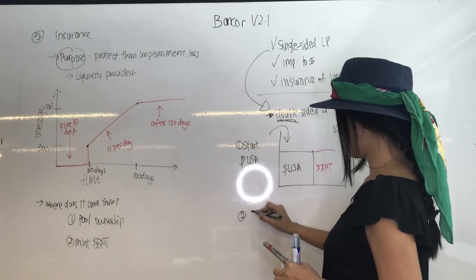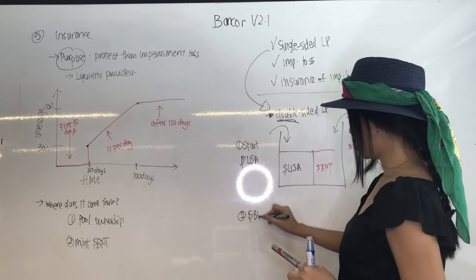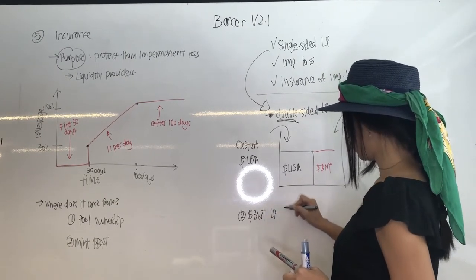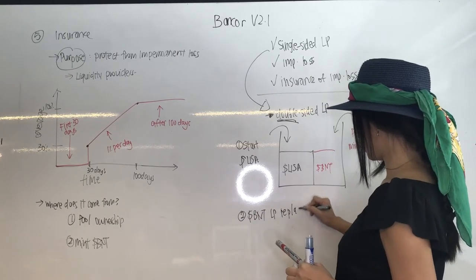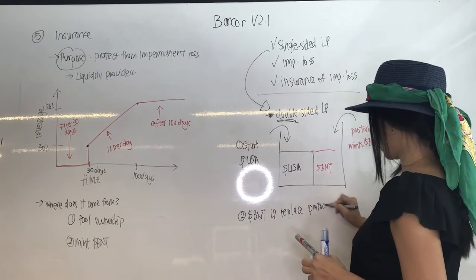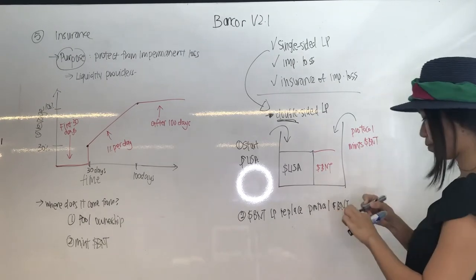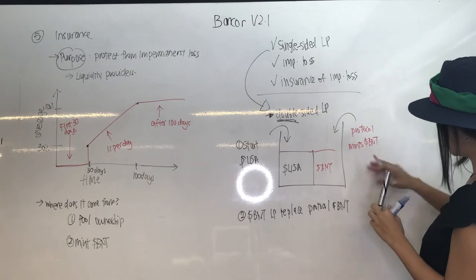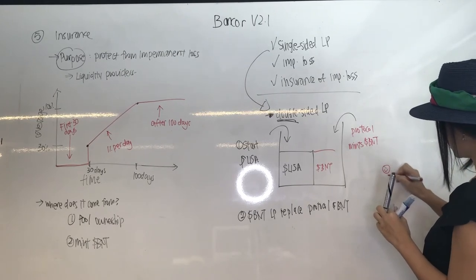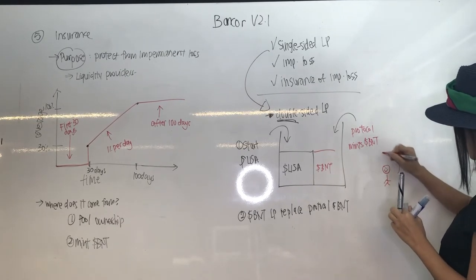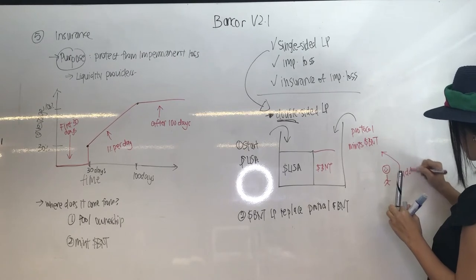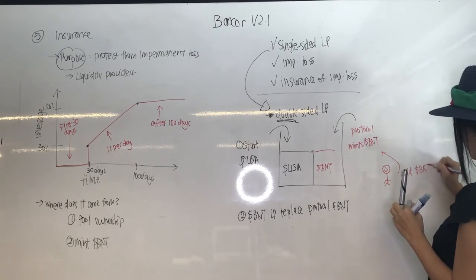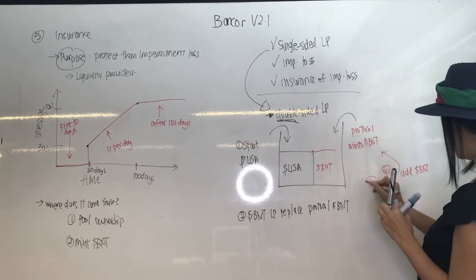So this is where the BNT liquidity providers come in. What they do? They come in to replace the BNT that's minted by the protocol. So the BNT liquidity providers come in and they remove the BNT that's minted by the protocol. So this guy, he comes in. He adds BNT into that liquidity pool.